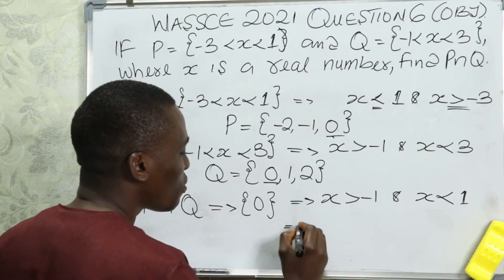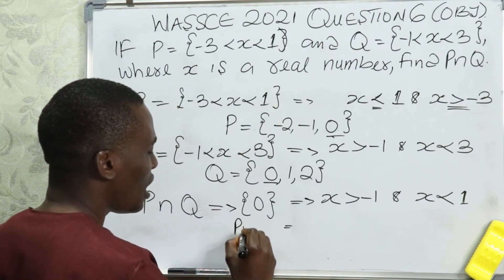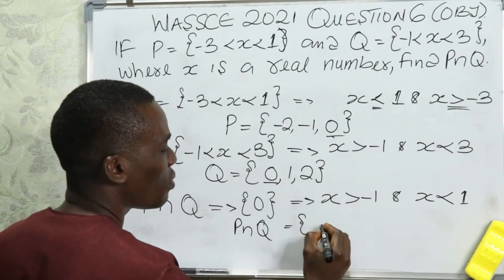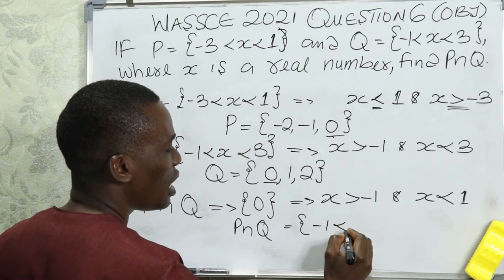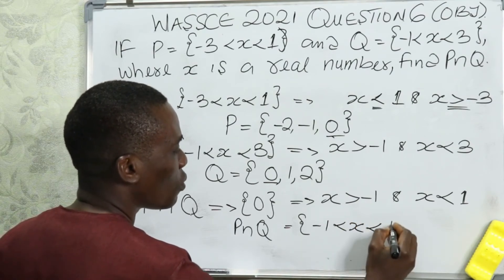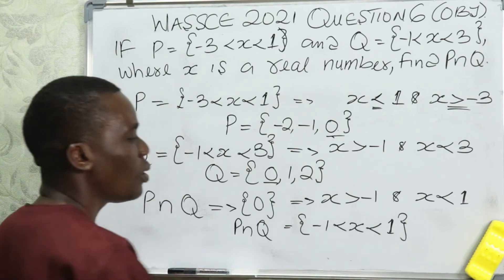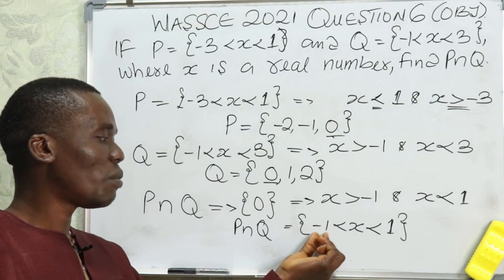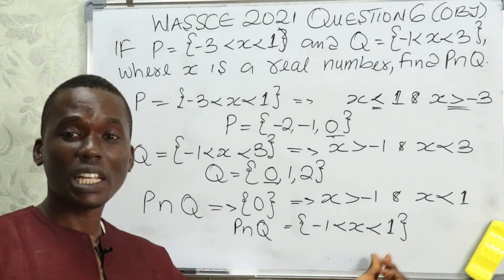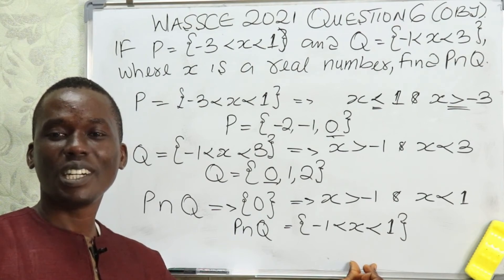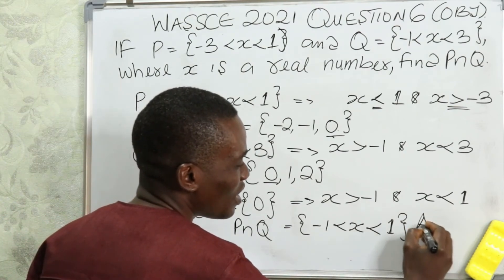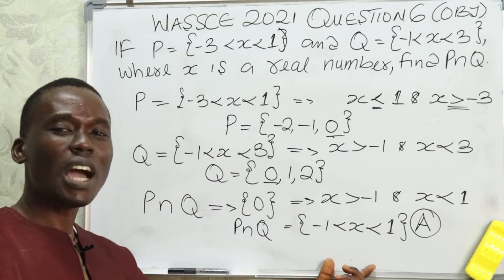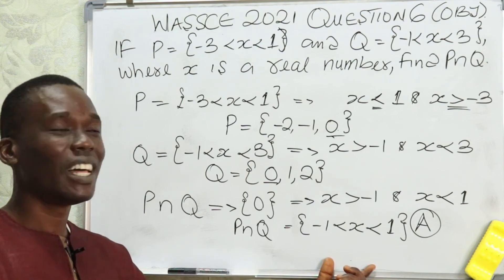So the range of values for P intersect Q is: minus one less than x less than one. If you check this range of values, x is between minus one and one, which gives us zero. If you check your options you are going to see that your solution is option A. That's how easy it is to solve questions like this.